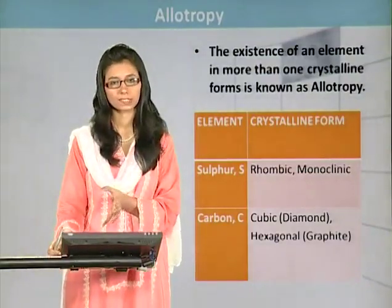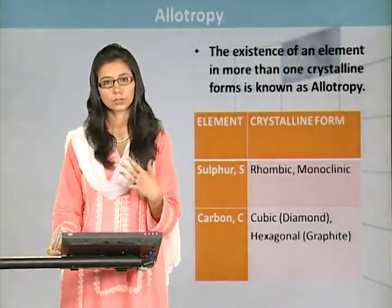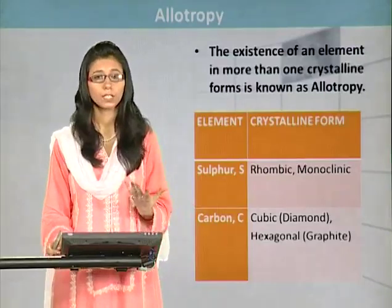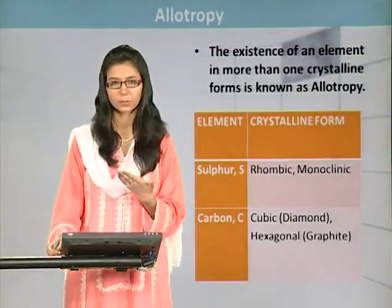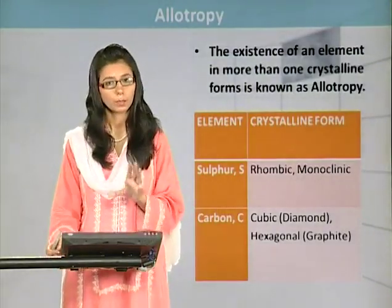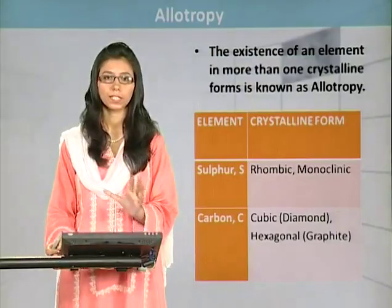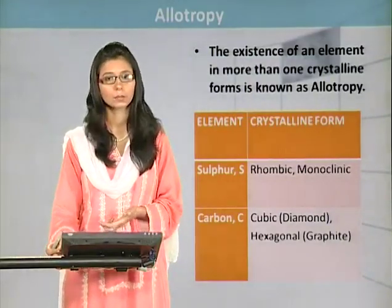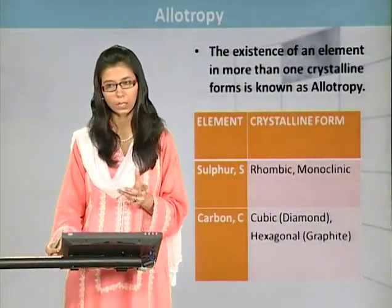Now, when we discuss allotropy, there are different elements that exhibit allotropy. Among them, sulfur, carbon, and phosphorus are very common examples. Here, we are concerned about sulfur — rhombic and monoclinic. We have discussed these in a previous lattice system, and you are very much familiar with these various crystalline forms. So rhombic and monoclinic are the two different crystalline forms in which sulfur is available.